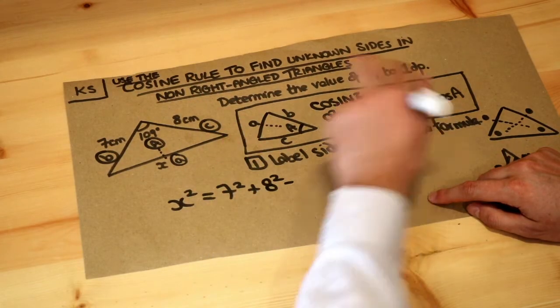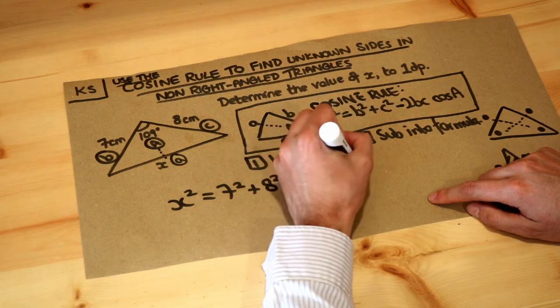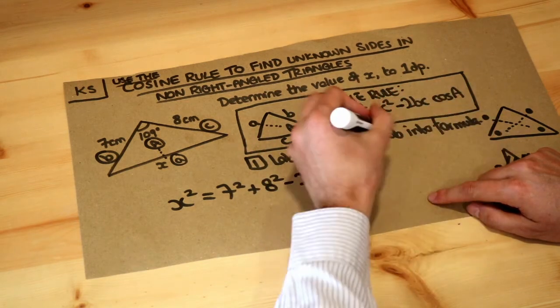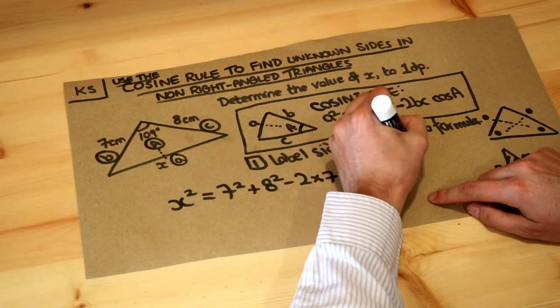Minus 2 times b times c, 2 times 7 times 8, multiplied by the cos of the capital A, that's 109.